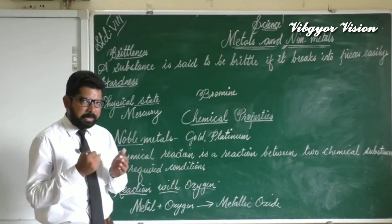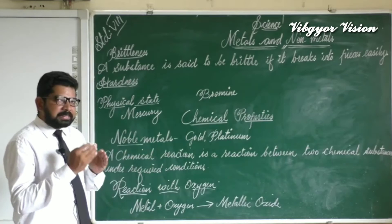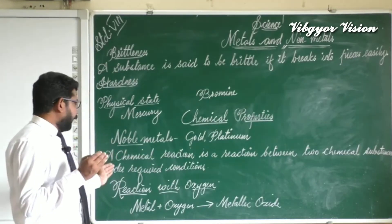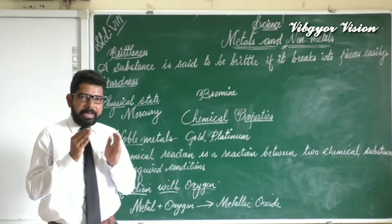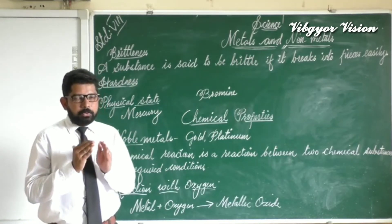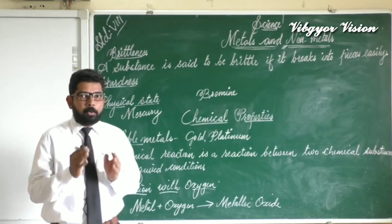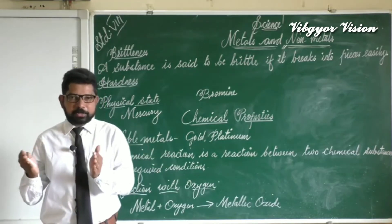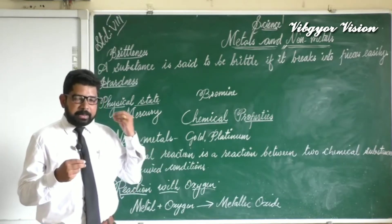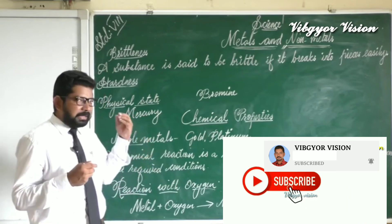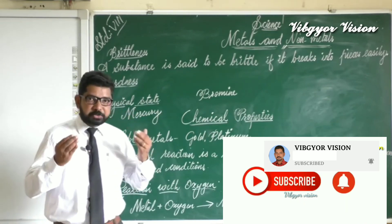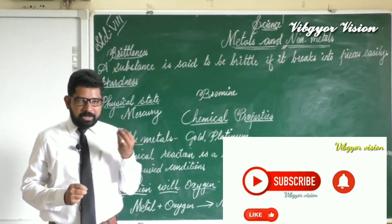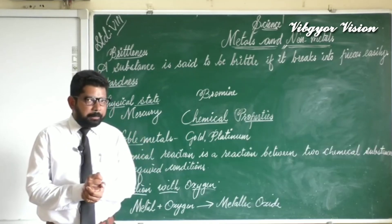A chemical reaction is a reaction between two chemical substances under required conditions. A chemical reaction can usually be represented with the help of chemical equations — just as in maths we use different equations, in chemistry we also represent chemical reactions with chemical equations. We will learn how to write these chemical equations.